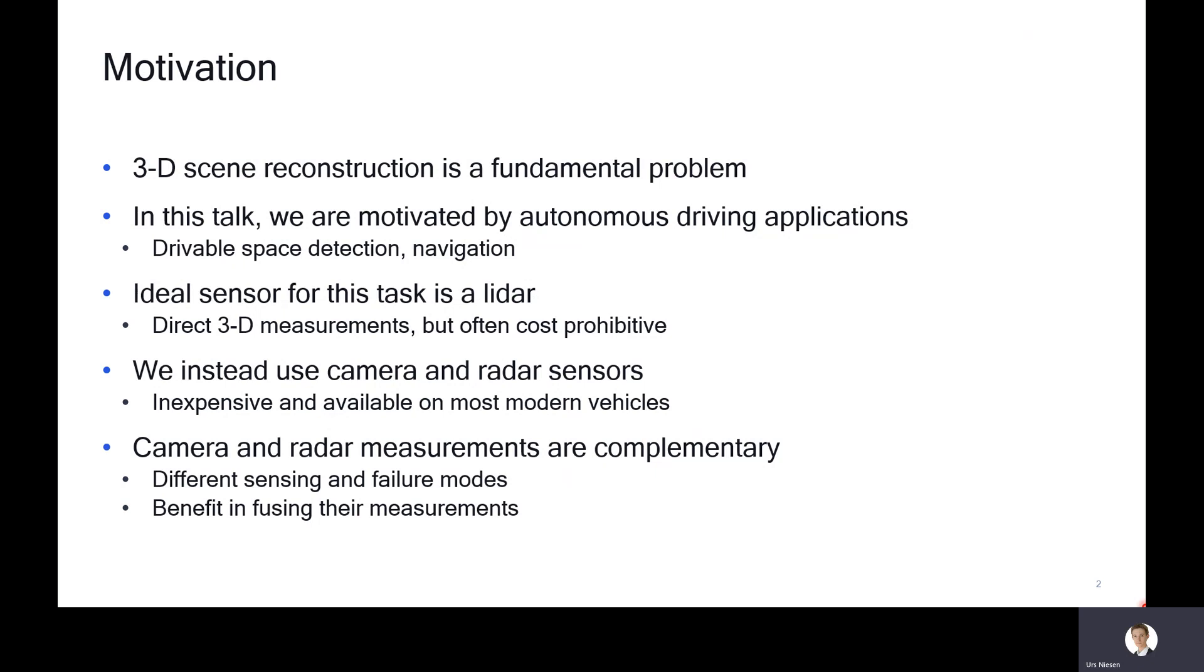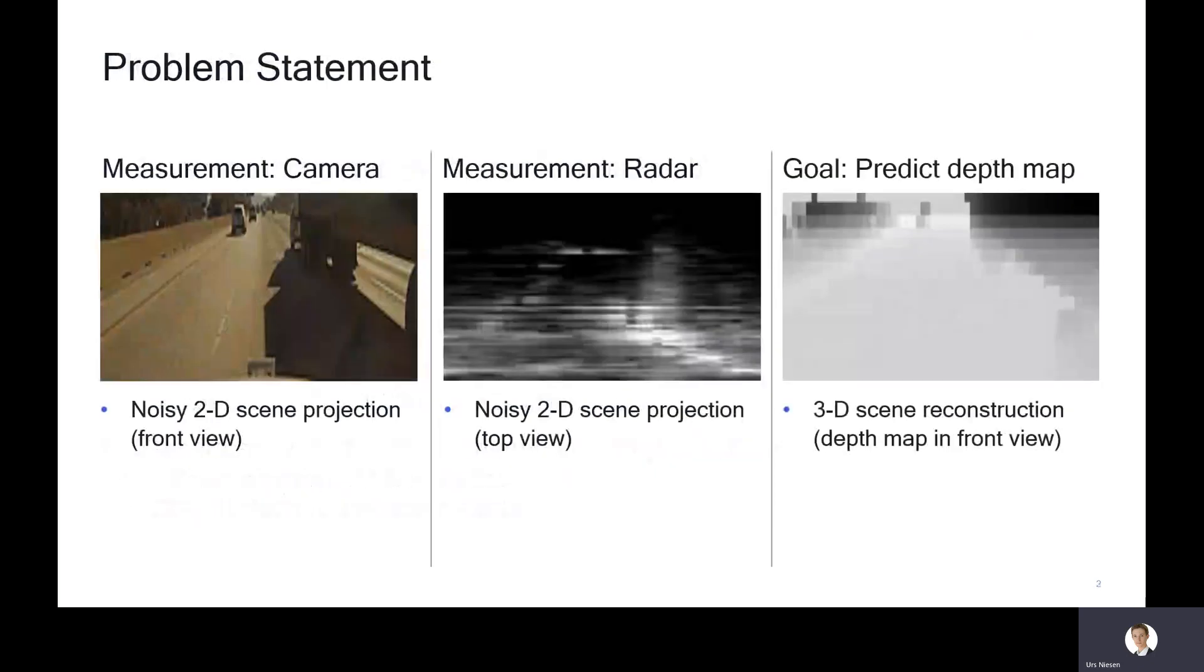Camera and radar measurements are complementary in nature. They have different sensing and failure modes. Both camera and radar measure 2D projections, but different 2D projections of the 3D scene. The camera is a passive sensor, the radar is an active sensor, and therefore they have different failure modes. As a consequence, there's benefit in fusing their measurements.